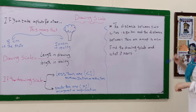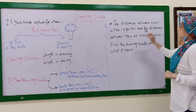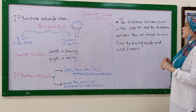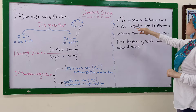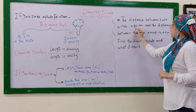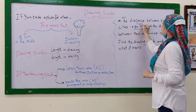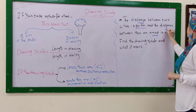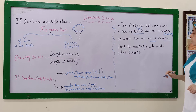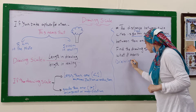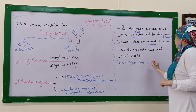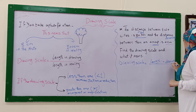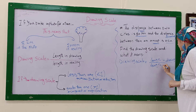For example, if the distance between two cities is 80 kilometers and the distance between them on a map is 4 centimeters, find the drawing scale and what it means. The distance between the two cities is 80 kilometers — that is the real length — and the map distance is the drawing length. So drawing scale equals length in drawing divided by length in reality.